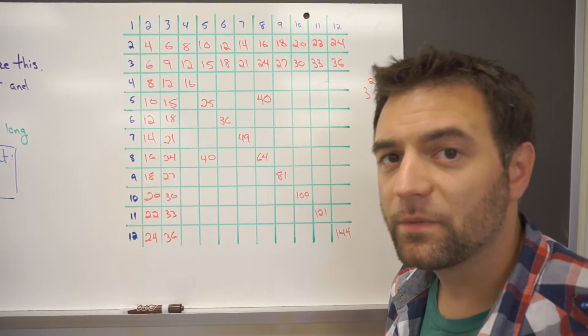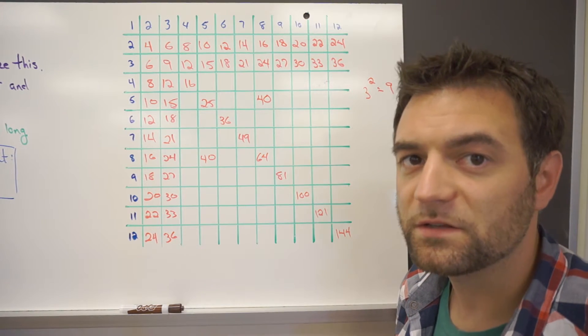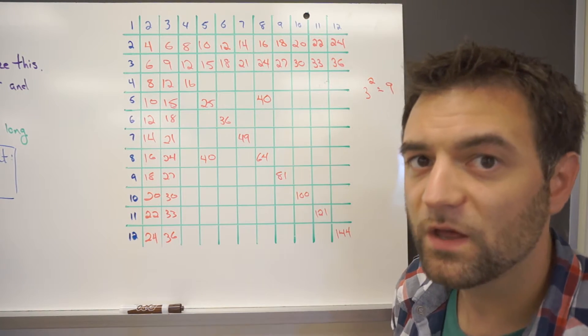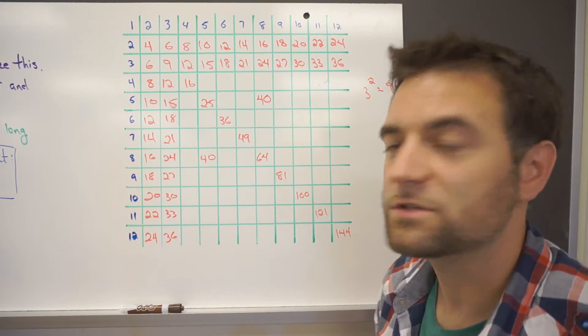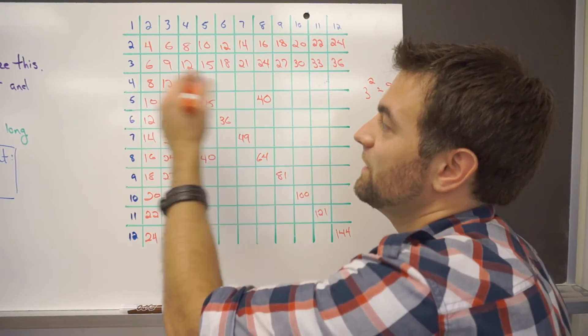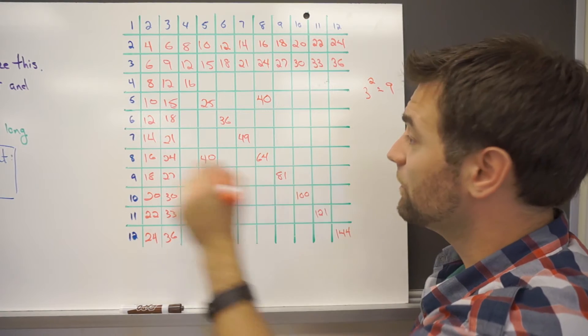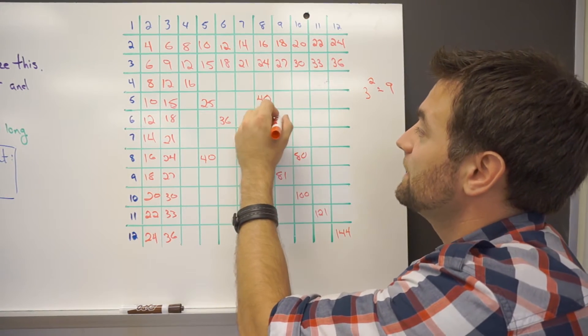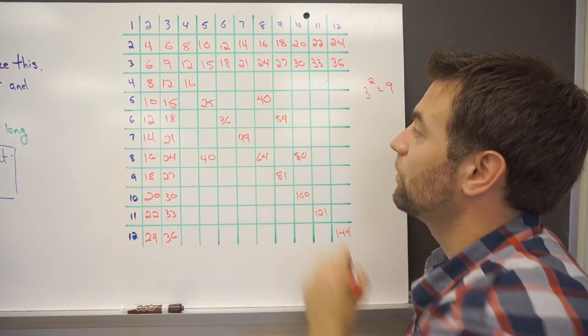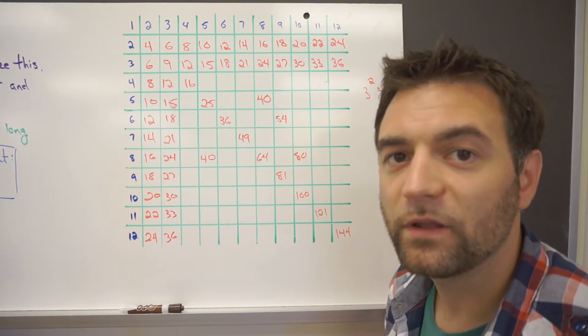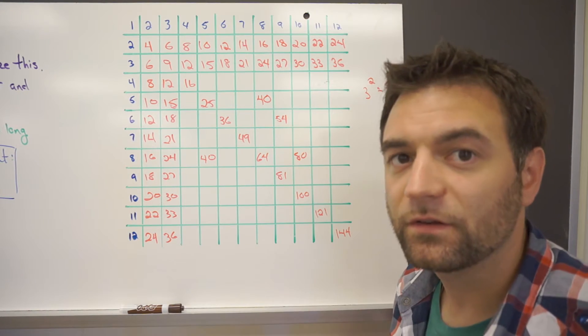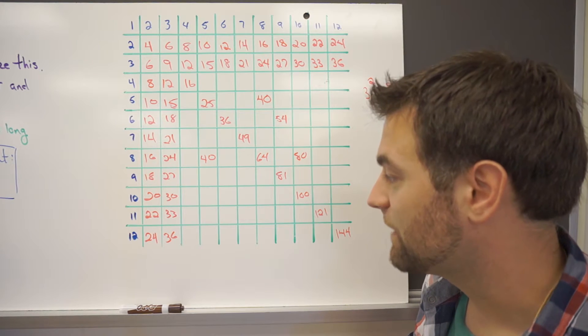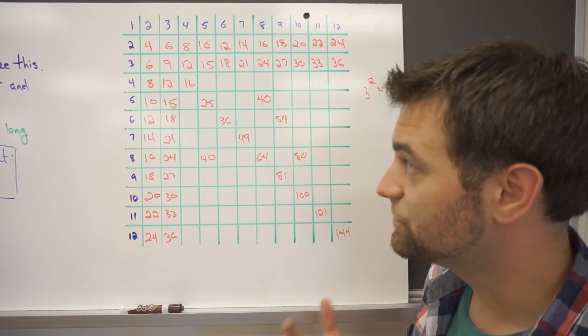But once you start becoming proficient and it's getting really easy to fill this in this way, then you start just randomly picking different spots on the table to fill in. You know, doing 8 times 10 is 80. And 6 times 9 is 54. And you can bounce around the table like that and practice randomly filling your table in to do all the calculations.